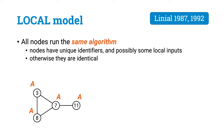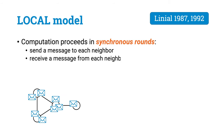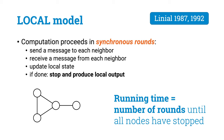We have some graph, and the graph represents our computer network. Each node is a computer, each edge is a communication link. All nodes run the same algorithm. The nodes have unique identifiers and maybe some other local inputs, but other than that they are identical. Computation proceeds in synchronous rounds. In each round, each node sends a message to each neighbor, receives a message from each neighbor, and updates its local state based on the messages it got. Eventually, each node has to stop and announce its own local output. The running time is the number of rounds until all nodes have stopped. So in this model, time is the same thing as the number of communication steps.